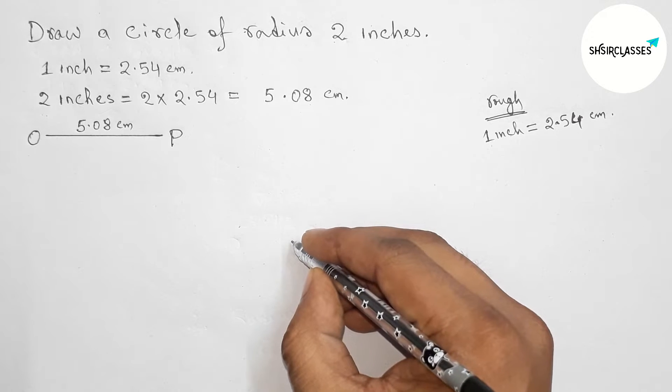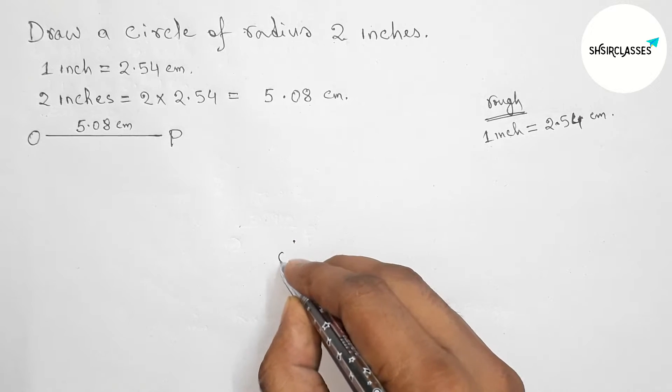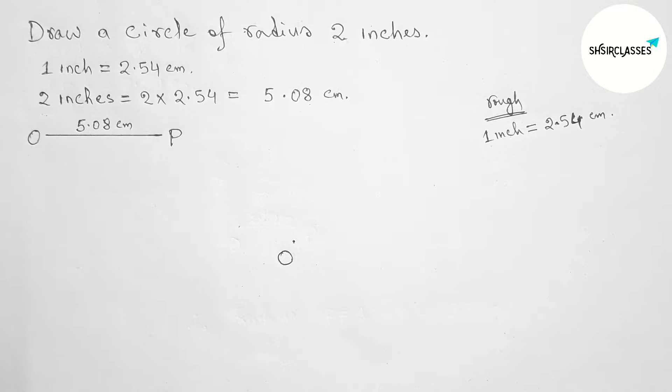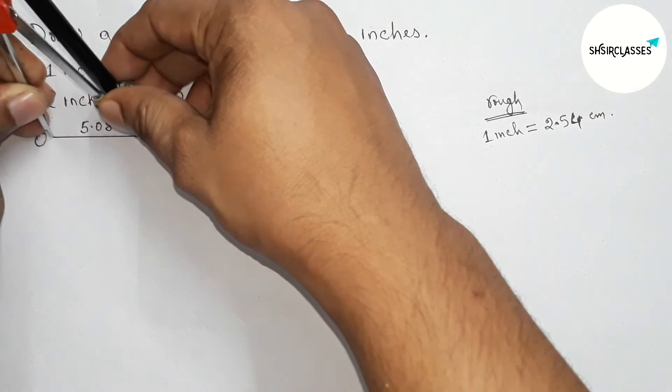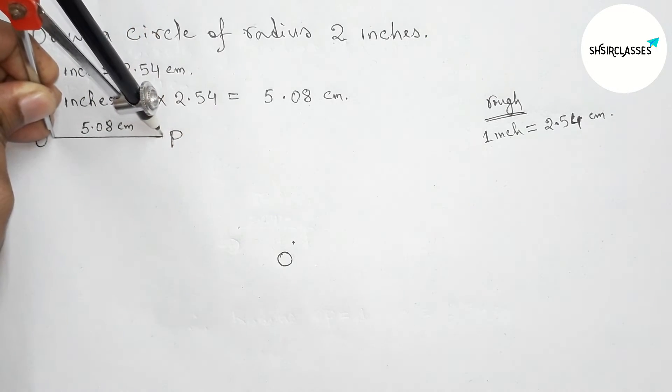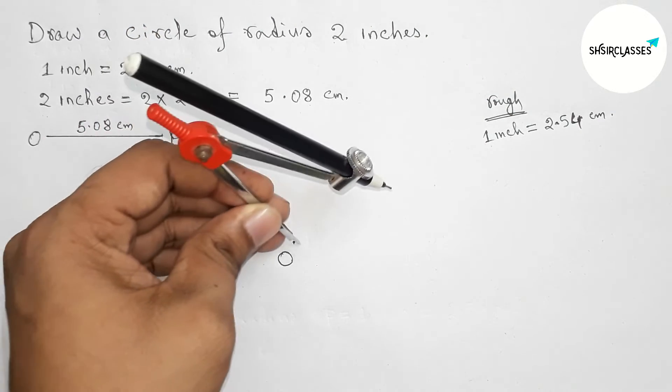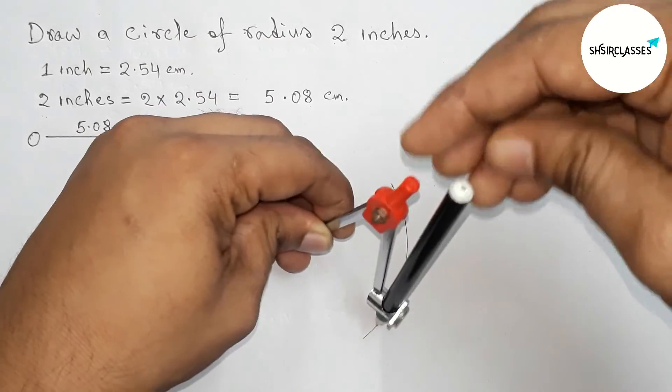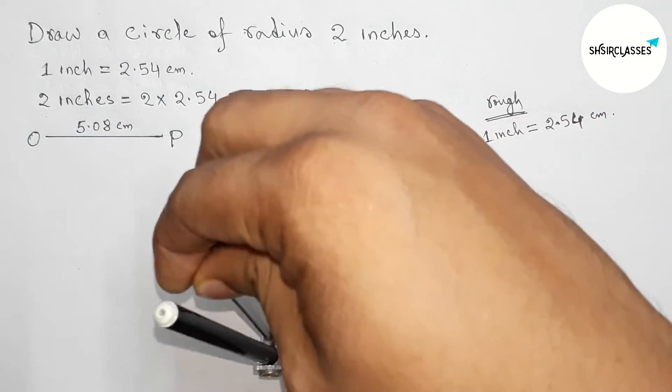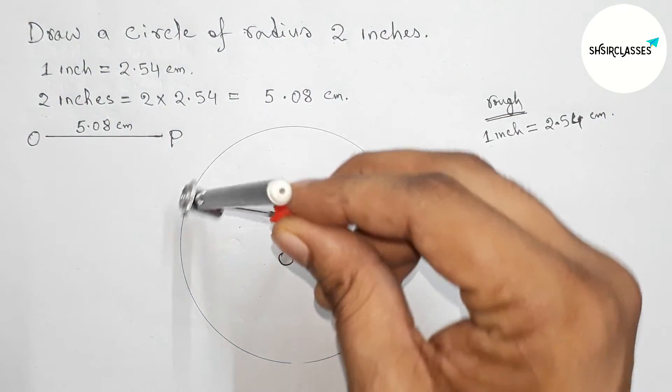Taking any point O, and with the help of compass, measuring the length OP. Putting the compass on point O and now drawing the arc by this way.